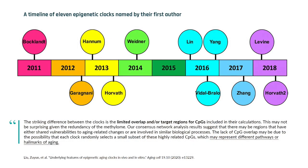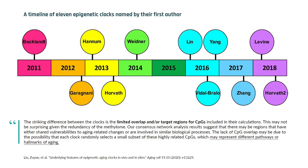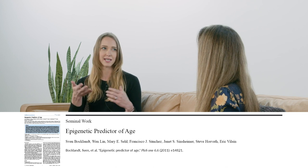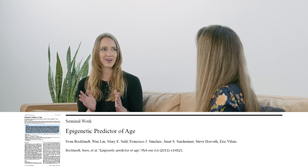So the original clocks were trained using machine learning. We're usually trying to predict something, so you take all your methylation data and say, how can I predict this? The original clocks used chronological age — can I look at methylation and predict someone's chronological age? But chronological age is an imperfect proxy of the process we're actually trying to quantify.